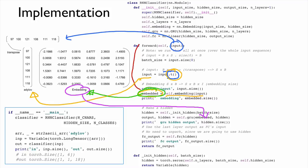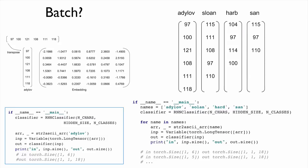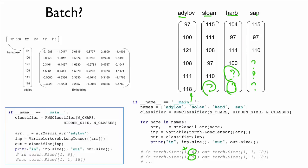However, we want to handle many names at once using batches. One issue is that different names have different lengths, so when making a batch, we need to decide what values to pad the shorter sequences with. If we handle names one by one there's no problem, but for batching, we need a solution.